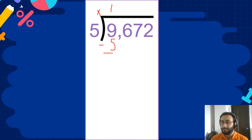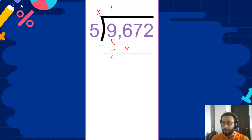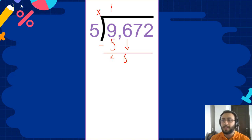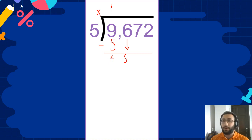Subtract. We get 9 minus 5 is 4. What do we do? We bring the next digit down — 6. Now we ask ourselves, how many 5's fit into 46? It's very easy. 9. 9 times 5 is 45.